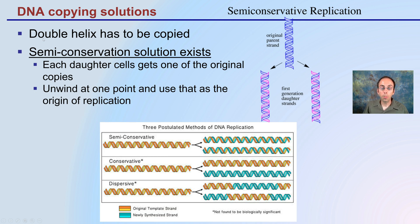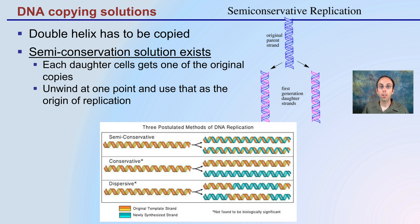In summary, copying the double helix is accomplished through semi-conservative replication, meaning one strand is used as the template strand and the other is the newly replicated strand. Each daughter cell gets one original copy and one new copy, which helps reduce the chance for errors. Unwinding occurs at the replication site, and in eukaryotes with long genomes there are multiple replication sites, but they all follow this semi-conservative replication method.